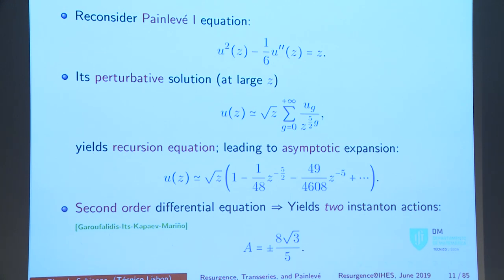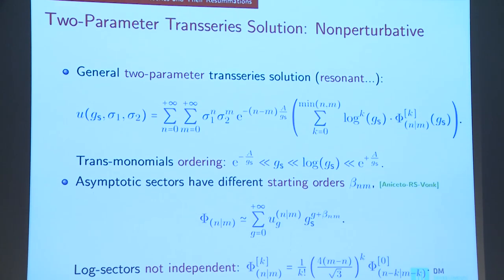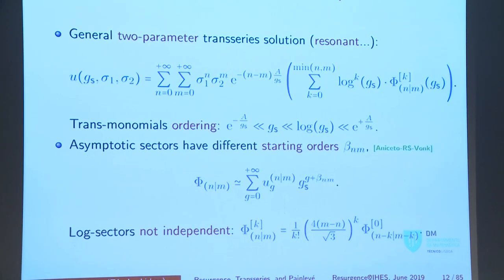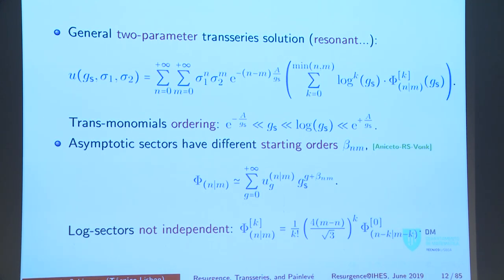What will the trans-series look like? It turns out that this is a second-order differential equation with precisely two instanton actions, and they're symmetric — that gives origin to resonance. The two-parameter trans-series looks like that. σ₁ and σ₂ are the trans-series parameters; these are the boundary conditions of Painlevé. I need two of them because it's second-order. These are the things that will suffer Stokes phenomenon — when there's Stokes phenomenon, these guys jump. Then I have the exponential contribution. Because the instanton actions were symmetric, there's an n minus m factor.